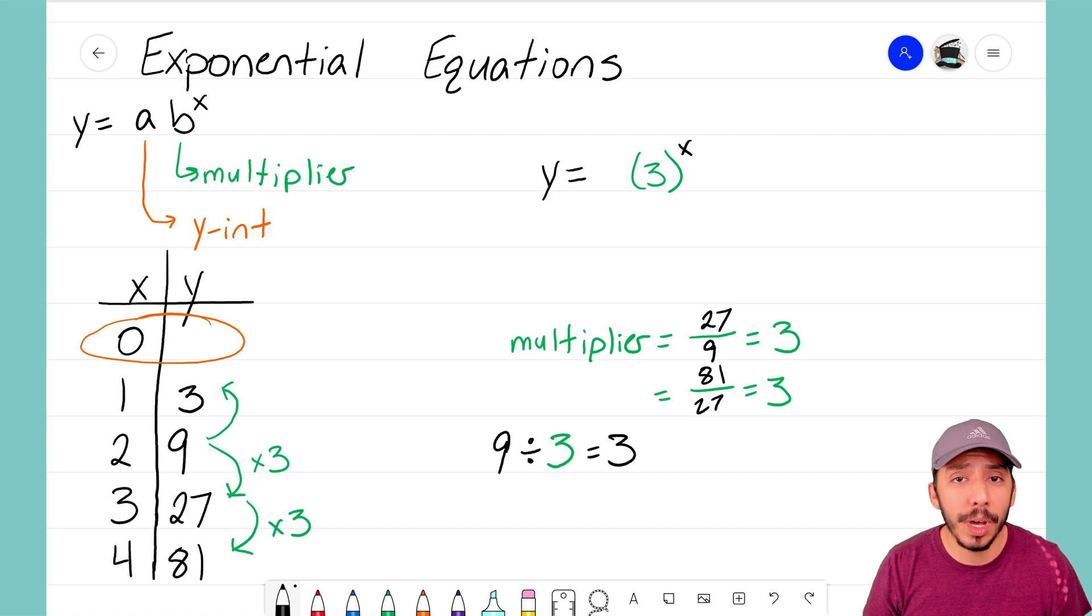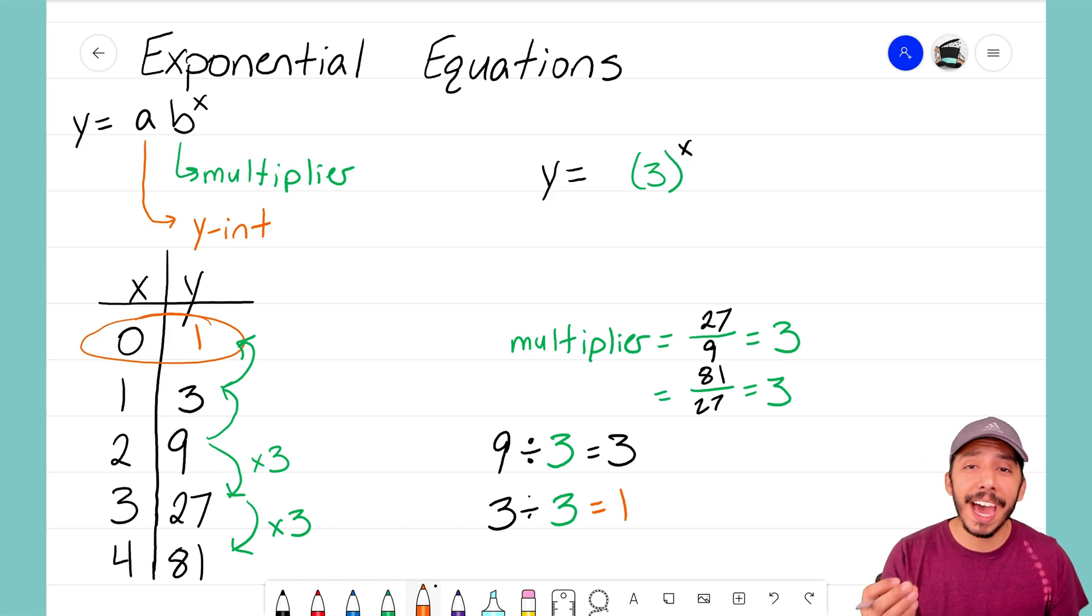Let's repeat this process one more time so we can determine that zero term, the term we actually care about. So I'm going to take 3 and divide it by my multiplier of 3, and I recognize there that my zero term is 1. That is my zero term, that is my y-intercept, that more importantly for us is our a term in our equation.